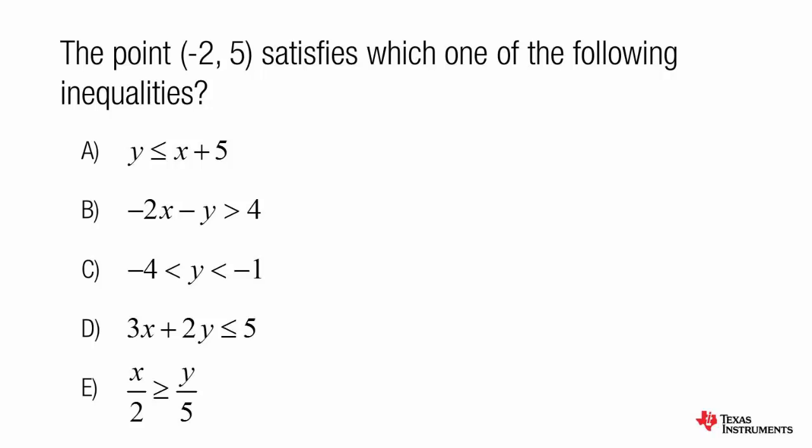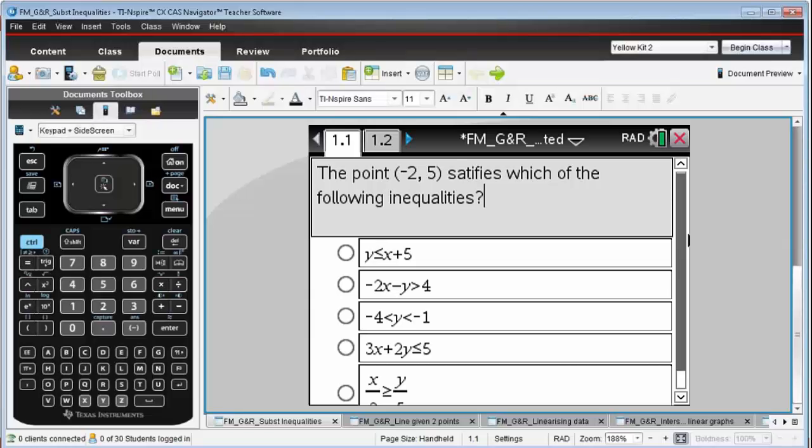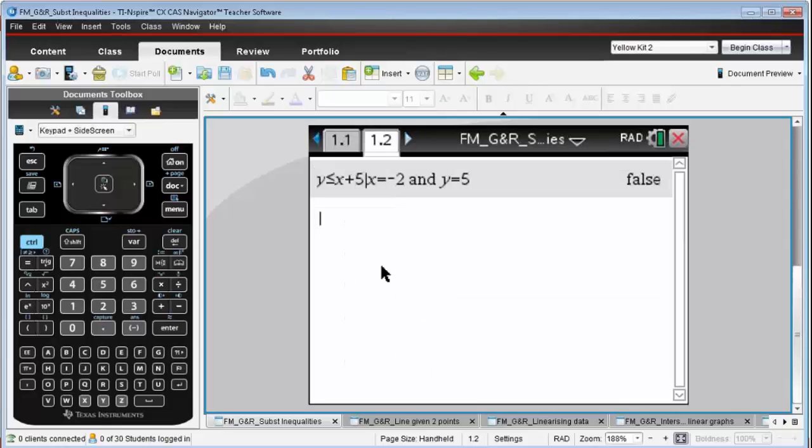Over on the calculator page, I've got a first example. This was selection A, and it was y is less than or equal to x plus 5.